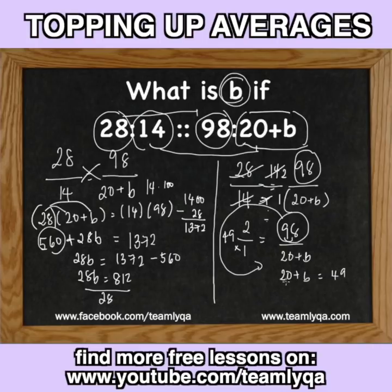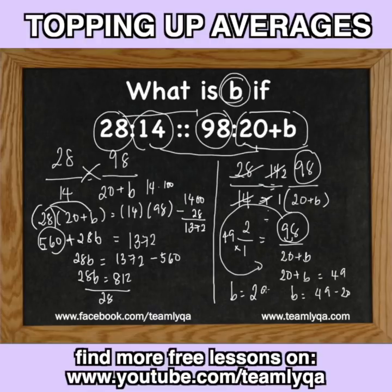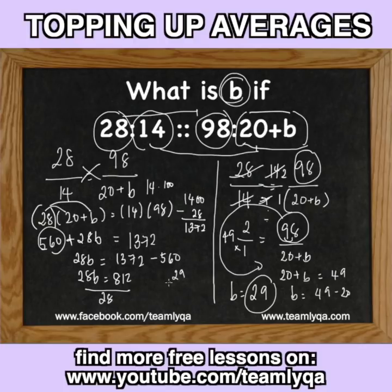What number do I add to 20 to get 49? I leave B on one side and do 49 minus 20. Actually, you can do this part mentally — you already know what number to add to 20 to get 49. That would be B is equal to 29. So the answer is 29. Now, to check: what is 812 divided by 28? You can just substitute 29. We multiply: 29 times 28 should give 812, just to check if the same result comes out on this side.